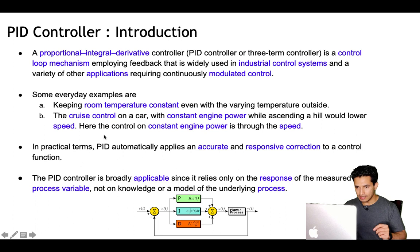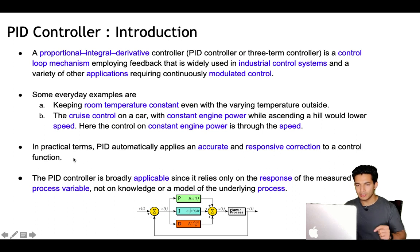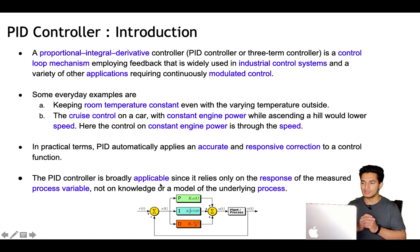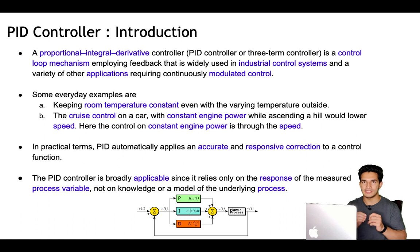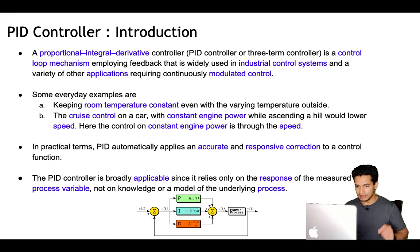How is constant engine power achieved? While ascending a hill, that would lower the speed, so the control on the constant engine power is achieved through speed. In practical terms, PID automatically applies an accurate and responsive correction to a control function. It is broadly applicable since it relies only on the response of the measured process variable, not on knowledge of how the underlying process works — just the response of the process variable is needed.